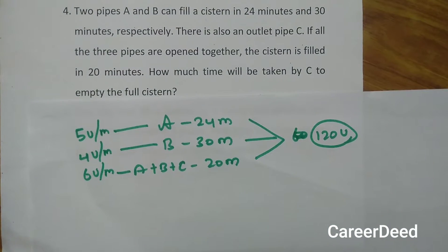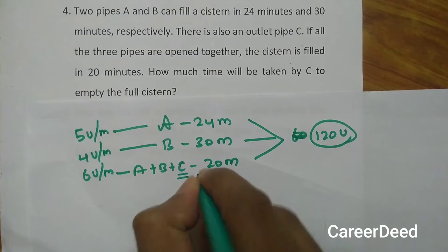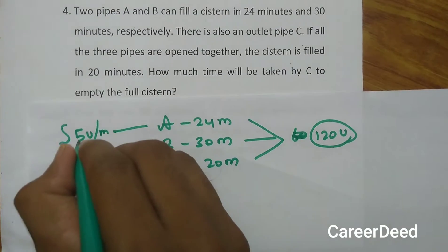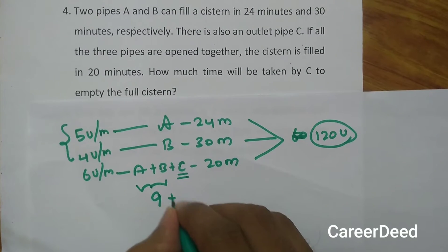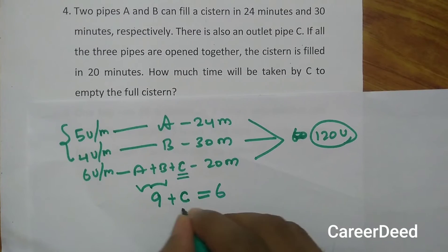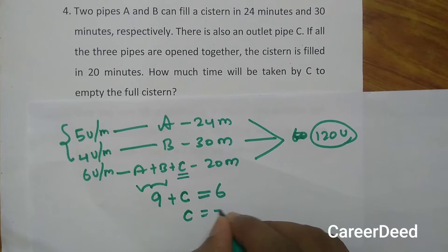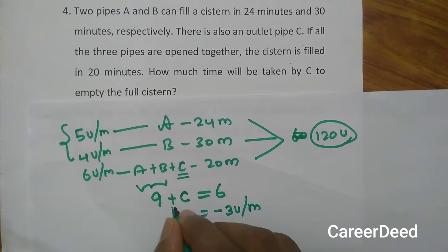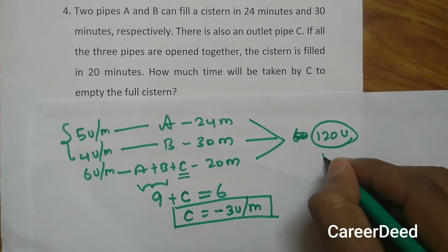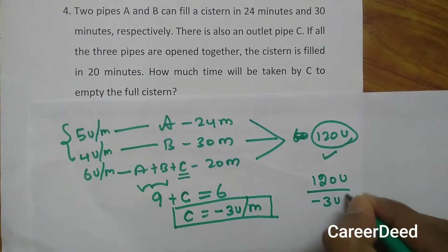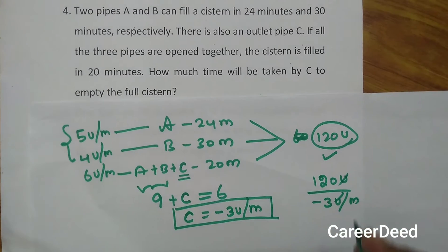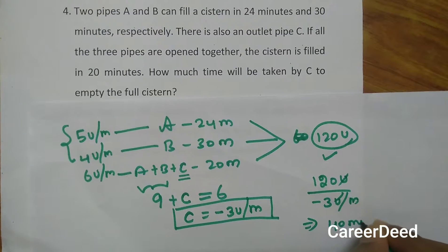We need to find how long pipe C alone takes to empty the full tank. The combined efficiency of A and B is 5 + 4 = 9 units per minute. Since A + B + C together gives 6 units per minute, we get: 9 + C = 6, so C = −3 units per minute, meaning C empties 3 units per minute. The total capacity is 120 units, so pipe C alone empties the full tank in 120 ÷ 3 = 40 minutes.